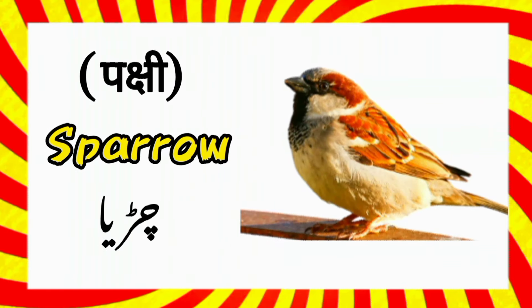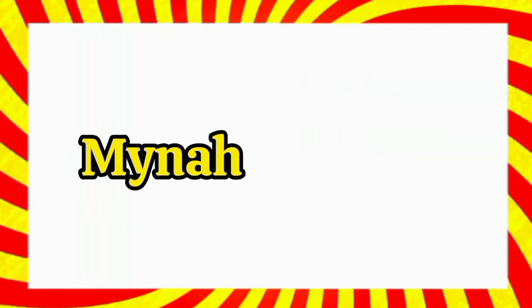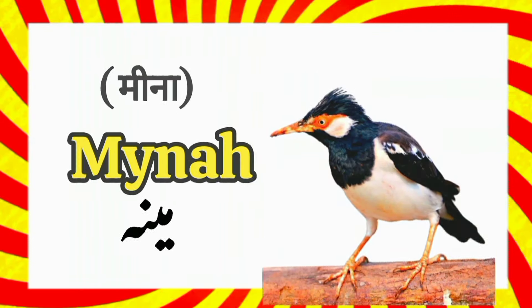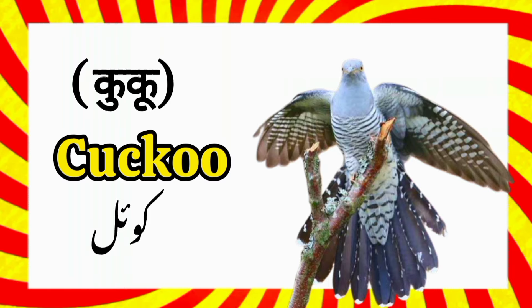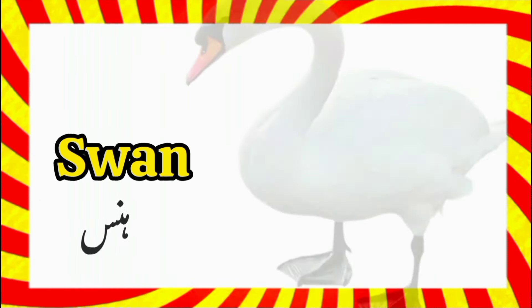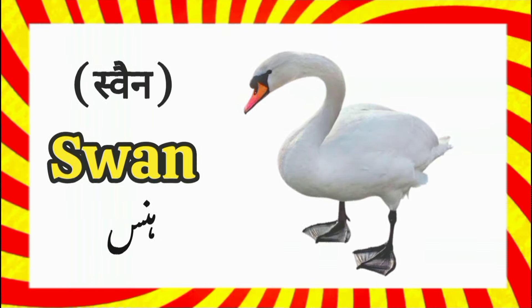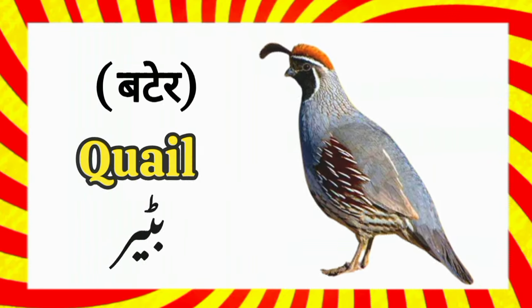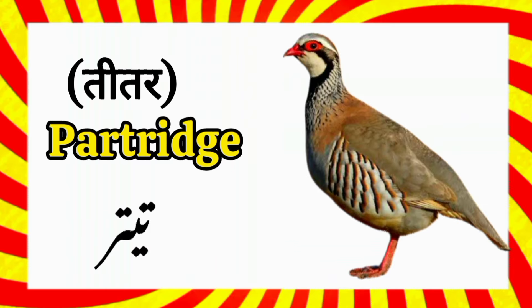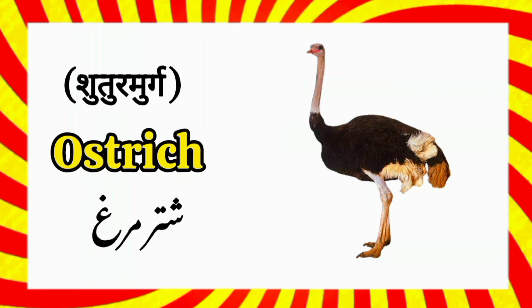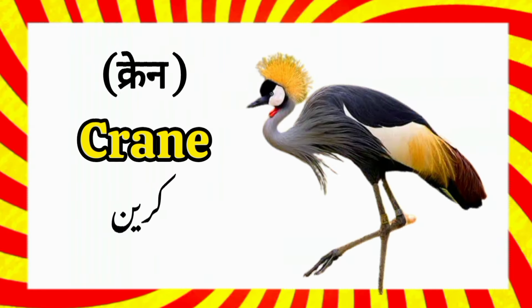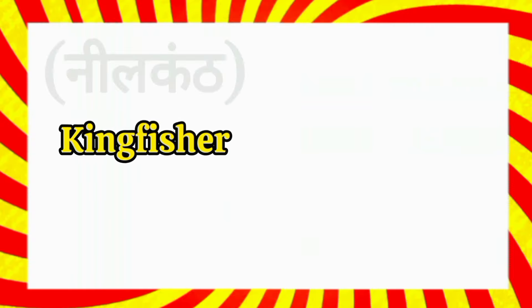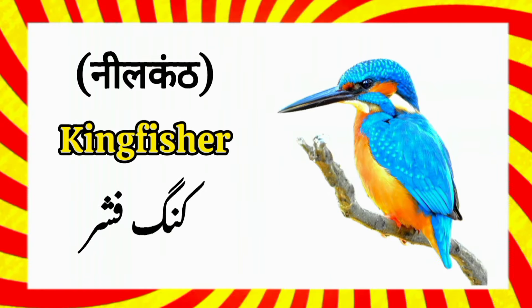Sparrow — Sparrow kehte hain Chidiya. Myna — Myna Kordoo. Cuckoo — Cuckoo maane Koyal. Swan — Swan kehte hain Hans. Duck — Duck kehte hain Batak. Quail — Quail kehte hain Battair. Partridge — Partridge kehte hain Teeter. Ostrich — Ostrich kehte hain Shutramur. Crane — Crane ko hum Urdu mein Crane hi kehte hain. Kingfisher — Kingfisher ko Urdu mein Kingfisher hi kehte hain.